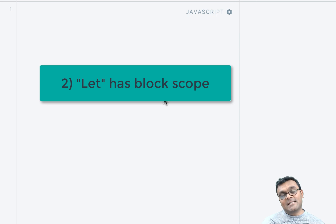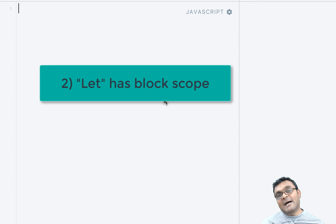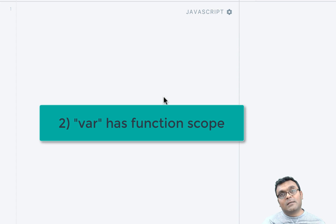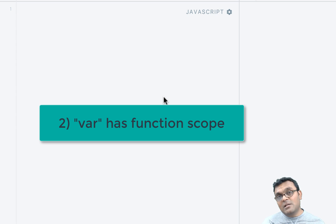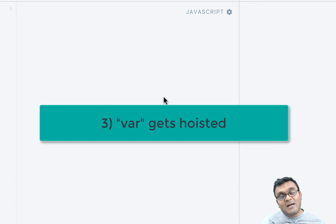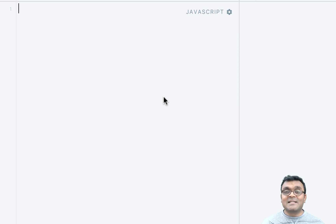The second difference is let has what is called block scope, which means a variable defined with the let keyword will die at the end of the block it's defined in — or be garbage collected — compared to var which has function scope, meaning it doesn't respect all other blocks except the function block. It will die at the end of the function it's defined in, not the block.